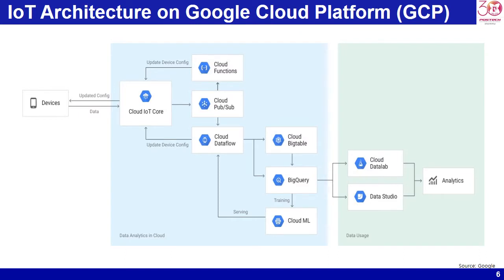This figure illustrates the IoT architecture on Google Cloud Platform. Google Cloud IoT Core is a fully managed service that allows you to easily and securely connect, manage, and ingest data from millions of globally dispersed devices. Cloud IoT Core, in combination with other services on the Google Cloud IoT platform, provides a complete solution for collecting, processing, analyzing, and visualizing IoT data in real time to support improved operational efficiency. In the following slides, I will explain the major components in Google Cloud IoT.